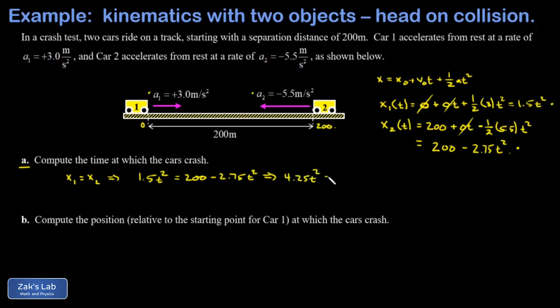I add the quadratic term to both sides and this gives me 4.25 t squared equals 200. Finally we divide by 4.25 and square root the result, and this gives me a time of 6.86 seconds.